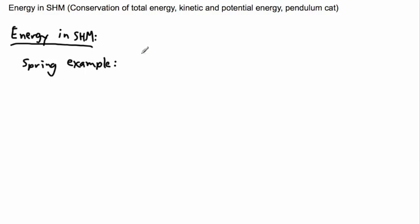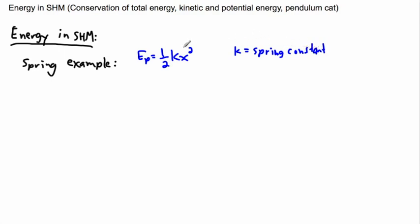The key thing is to first look at what the potential energy of a spring is. The potential energy of a spring is one half k x squared, where k is the spring constant — that's important. The spring constant is in units like newtons per meter, and there are a few different units for it. x is your displacement from equilibrium, measured in meters.